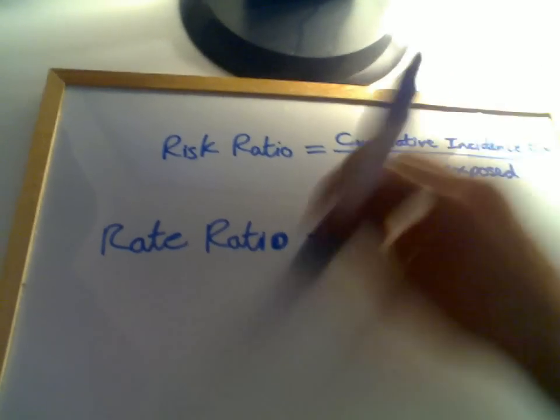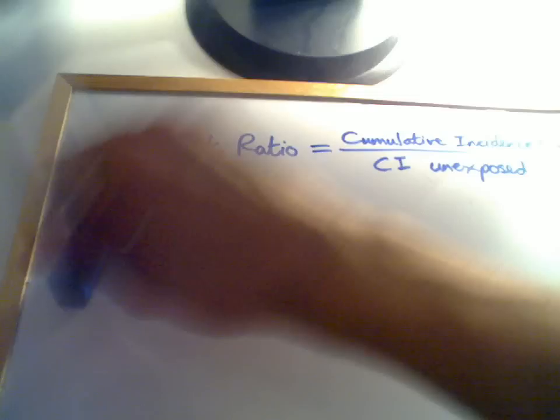Now relative risk, as you can probably figure out from this, is really important because it's a measure of the strength of association between a disease and an exposure. From now on I'm going to use the term disease and exposure rather than intervention and control. So relative risk is a measure of the strength of association between an exposure and a disease.